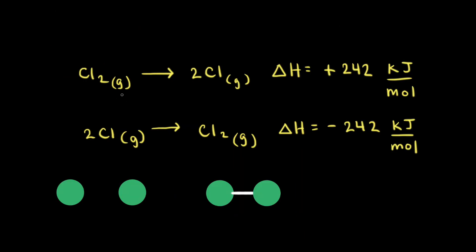We've already seen that it takes energy to break bonds — breaking the chlorine-chlorine single bond in diatomic chlorine gas takes positive 242 kilojoules per mole. If it takes energy to break bonds, that means energy is given off when bonds form. So when two individual chlorine atoms come together to form a chlorine-chlorine bond, energy is given off. The magnitude is still 242 kilojoules per mole, but now we have a negative sign to indicate energy is released when bonds form.